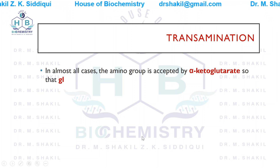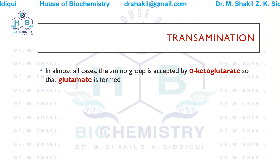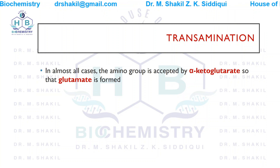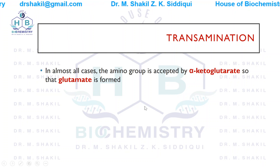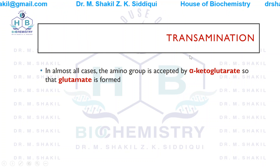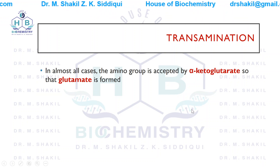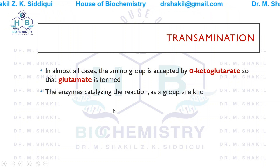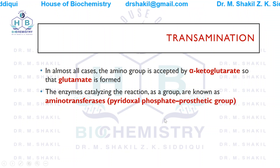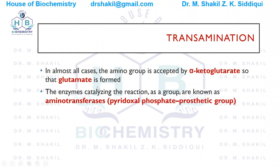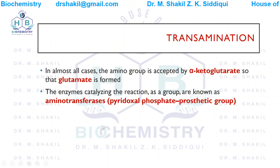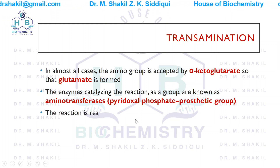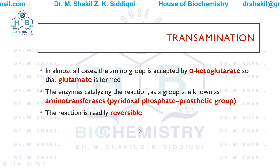In almost all cases, the amino group is accepted by alpha-ketoglutarate, so that alpha-ketoglutarate is converted into glutamate. This reaction is very common among many cells. The enzymes catalyzing this reaction are aminotransferases or transaminases, and pyridoxal phosphate acts as the coenzyme. The reaction is readily reversible.